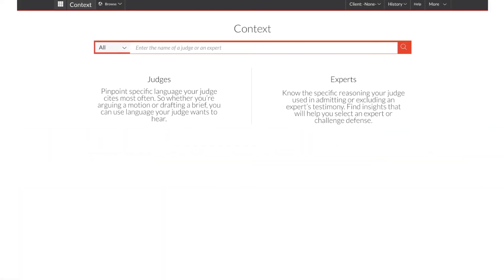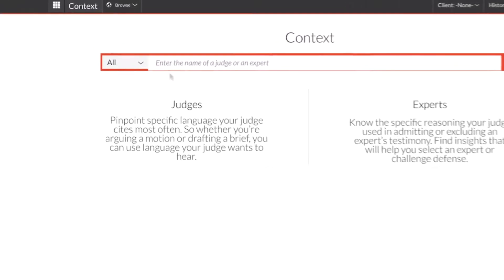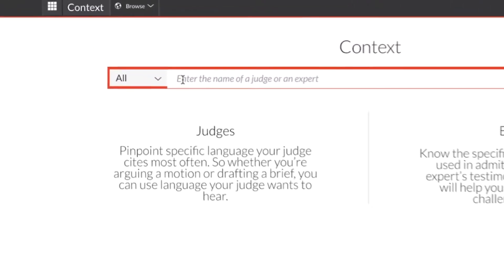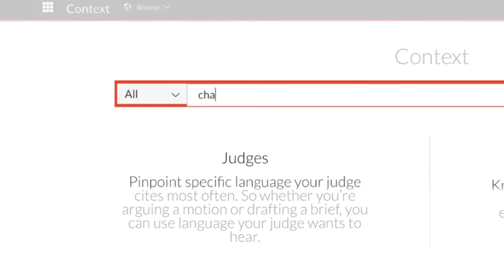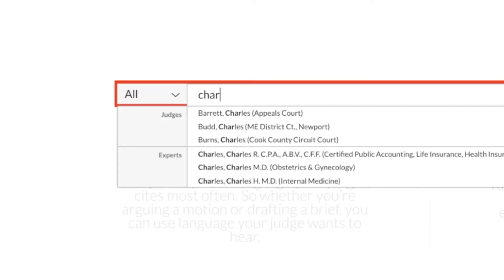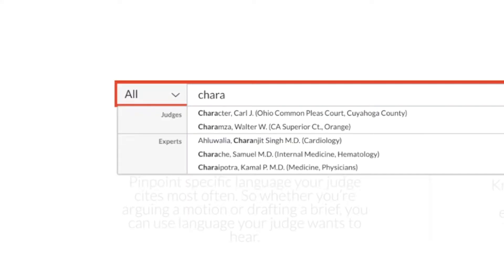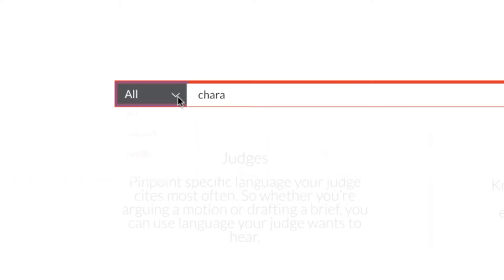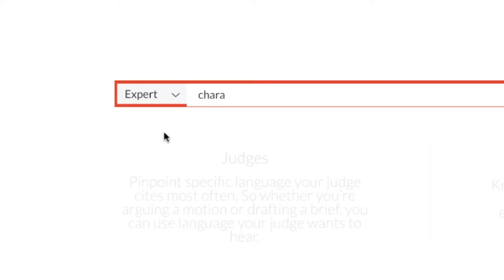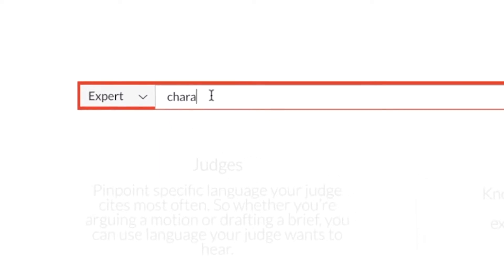Context Expert Profiles provides the most critical information about your expert witness. To begin searching for expert witnesses, simply type in the name of the expert in the red search box and a word wheel will appear with suggested names. You can also access the expert witness profile directly by clicking on the drop-down arrow from the red search bar and select Expert.